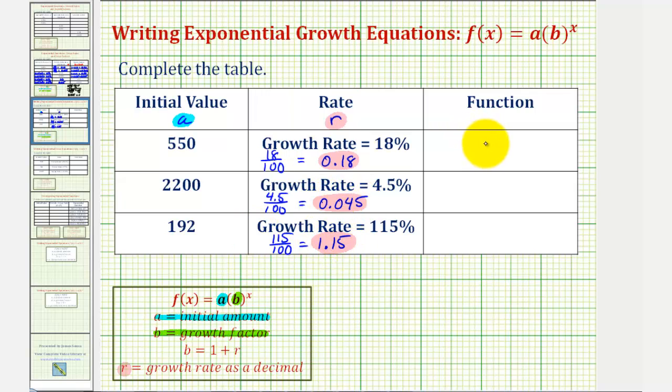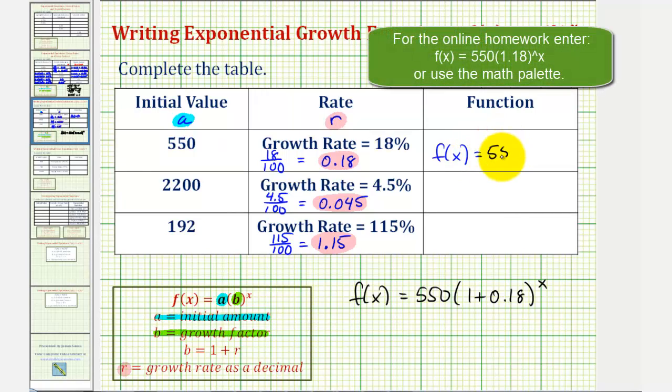So now before we write the equation, we just need to find b, where b is 1 plus r. So for this first row, f of x equals a, the initial value of 550, times 1 plus r raised to the power of x, or 1 plus 0.18 raised to the power of x. And therefore, our exponential growth function is f of x equals 550 times 1.18 raised to the power of x.